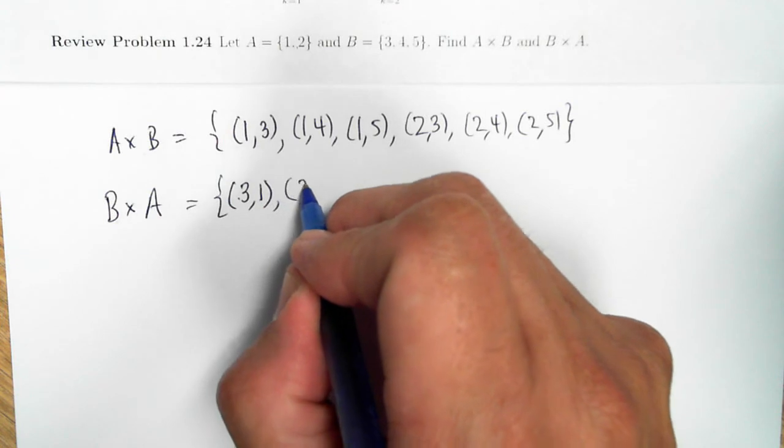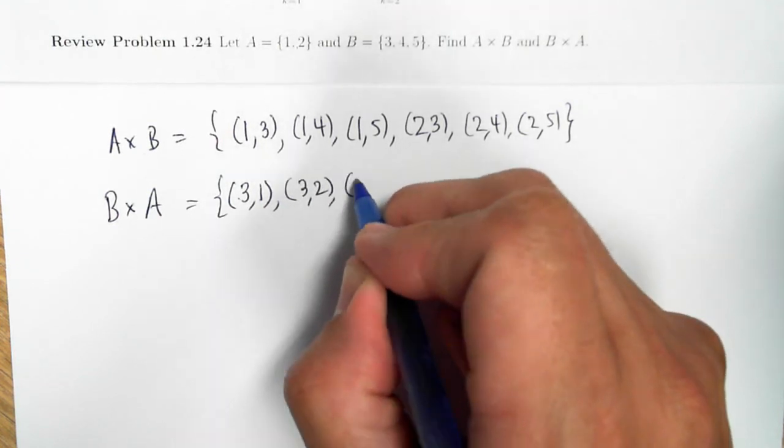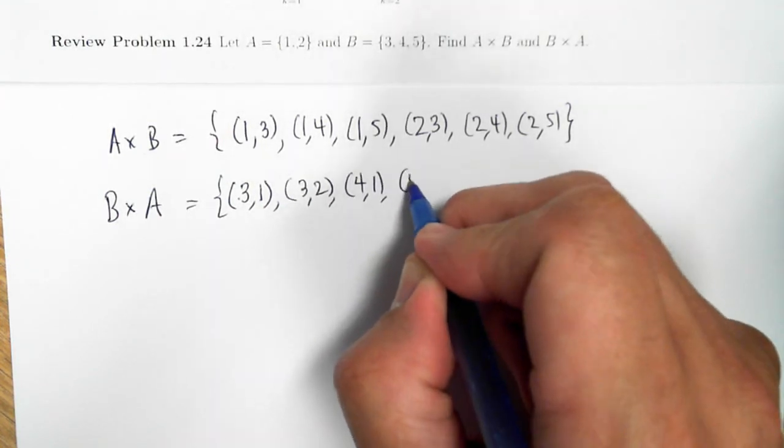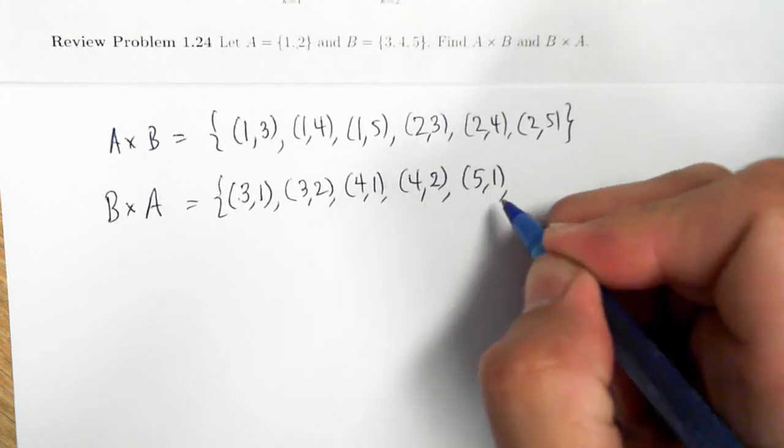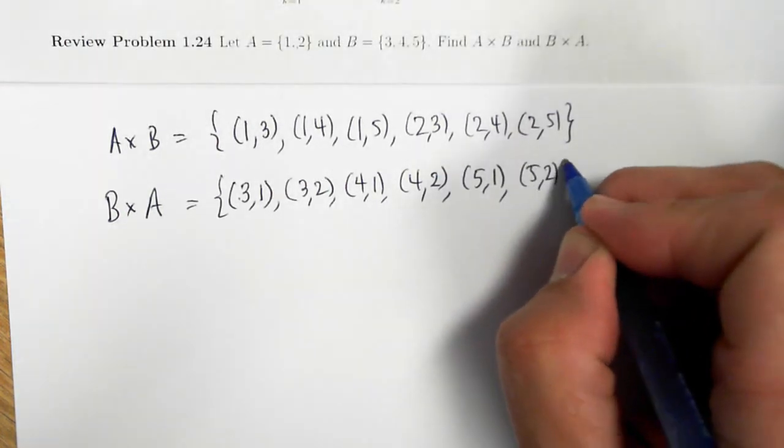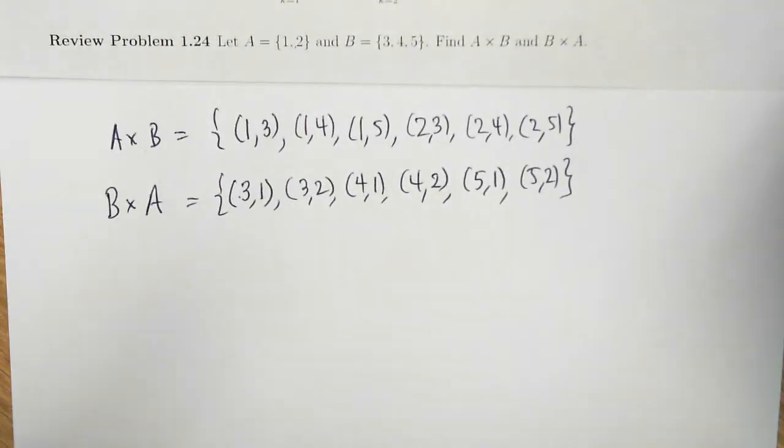So I could have (3,1), (3,2), I could have (4,1), (4,2), finally (5,1) and (5,2). So both of these sets have six elements where each element is an ordered pair.